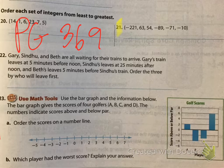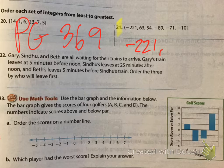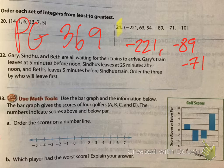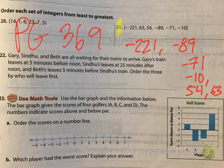We're ordering the integers from least to greatest. Integers are always whole numbers — they are a type of rational number, but fractions and decimals are not integers. What number is the least on our number line? Negative 221 — exactly. What's next? Negative 89. Then negative 71. Then negative 10. Then 54. And last — 63. Why isn't 221 the biggest number? Because it's a negative number.